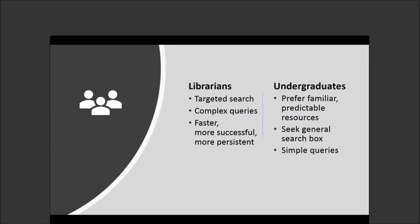Librarians are going to do a more targeted search with complex queries. You understand all the available resources, you're going to be faster, more successful, and really more persistent than most undergraduates will be. Undergraduates are going to prefer something that's familiar and predictable, which is why they return to Google over and over again. They'll be looking for that general search box because it's what they have experience with, and they're going to use simple search queries.